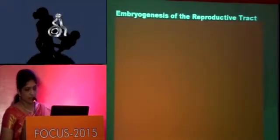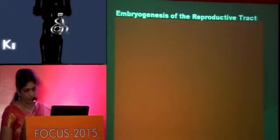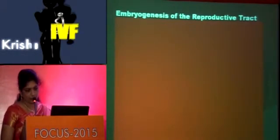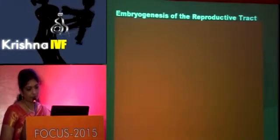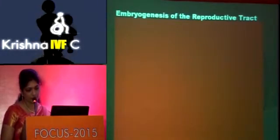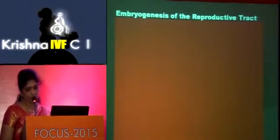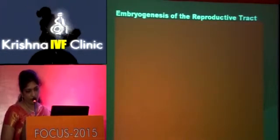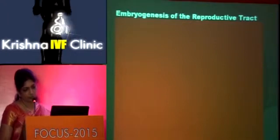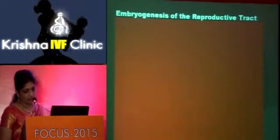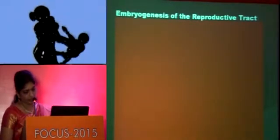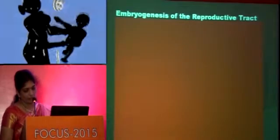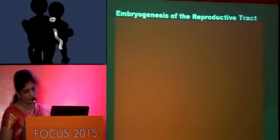As a foundation to understand the reproductive anomalies, we will briefly go through the early genesis of the reproductive tract. The development of the Mullerian duct is closely associated with the development of the urinary tract, so Mullerian anomalies are associated with anomalies of the urinary tract. However, the development of the ovary is different, so women with Mullerian anomalies have normal ovaries in most cases.